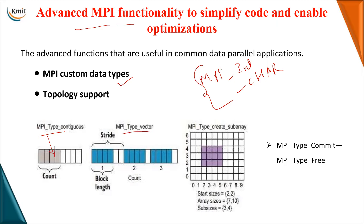Similarly, MPI_Type_vector is used for non-contiguous memory — memory divided into blocks that are not contiguously allocated. One block is assigned to block one, another to block two, and so on, with a stride between them. Another custom data type is MPI_Type_create_subarray, which allows you to create a subarray from a larger array.